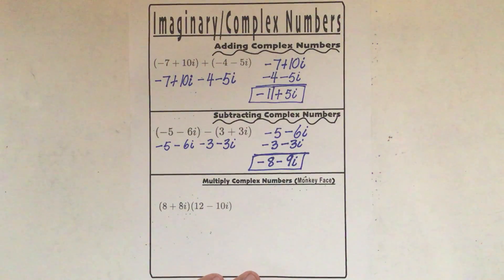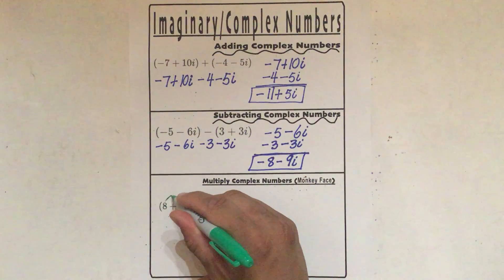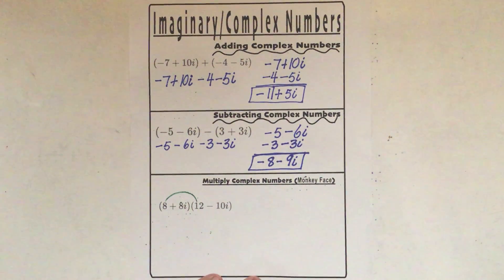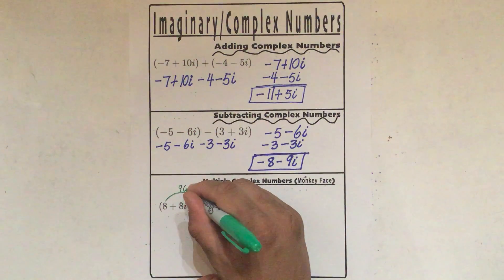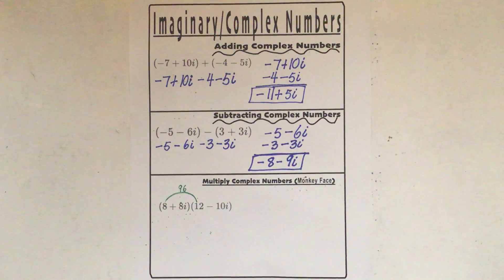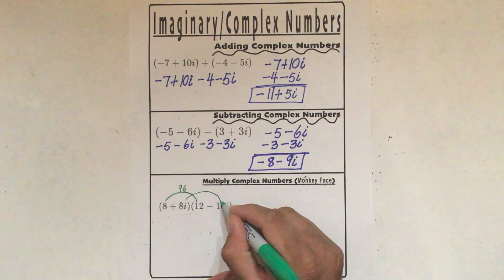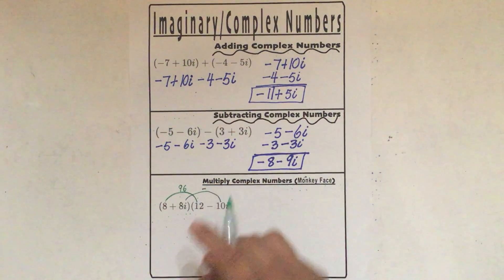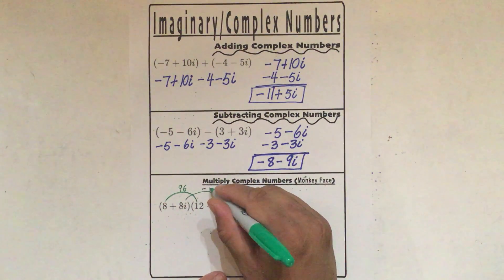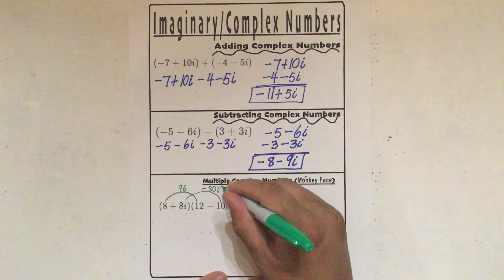So I'm going to do the left eyebrow first. The left eyebrow goes from this 8 to this 12, so I'm going to make an eyebrow like that. Since we're multiplying, 8 times 12 is 96. Now I'm going to make the right eyebrow, which goes from 8i to negative 10i. A negative times a positive is a negative, 8 times 10 is 80, and i times i is i squared.